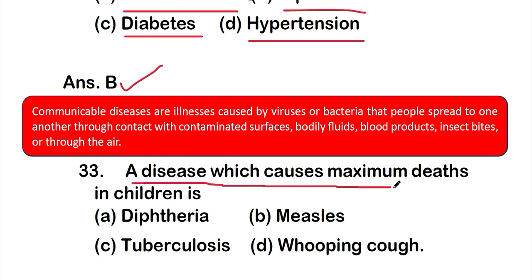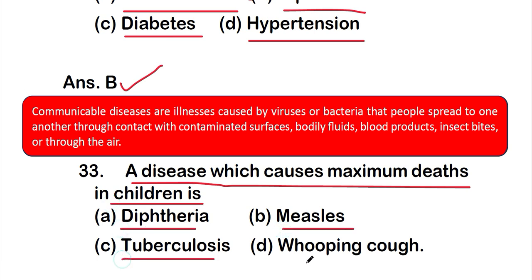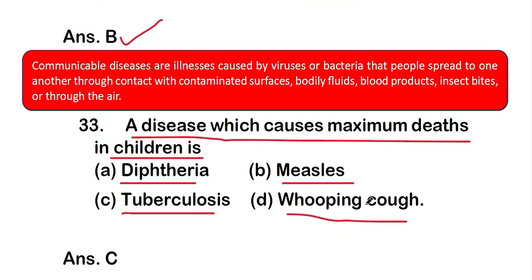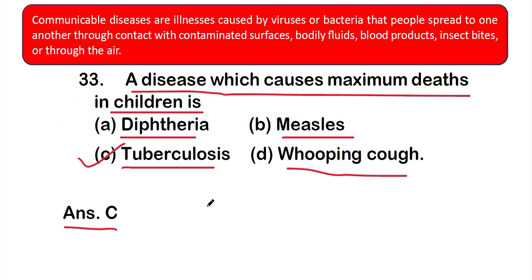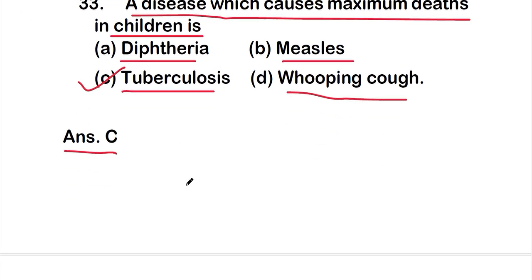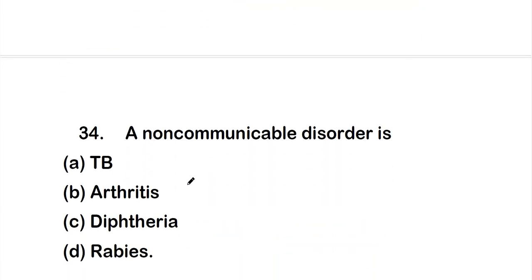Question number 33: A disease which causes maximum death in children is — Option A: diphtheria, Option B: measles, Option C: tuberculosis, or Option D: whooping cough. The right answer is Option C, tuberculosis. Tuberculosis is caused by the bacterium Mycobacterium tuberculosis, also known as TB.